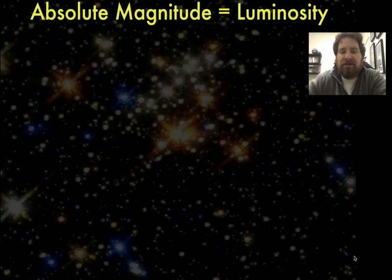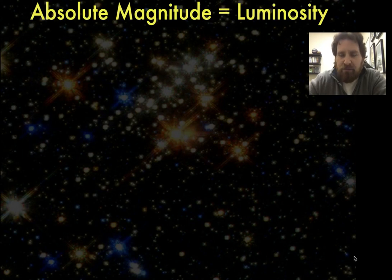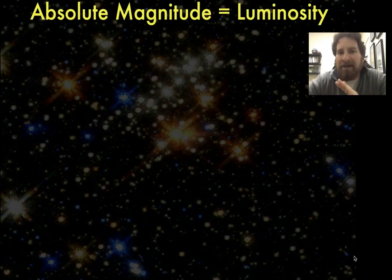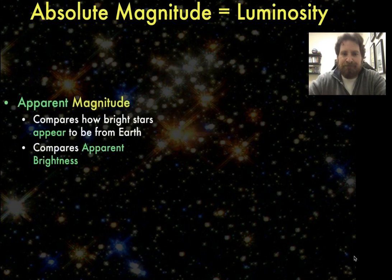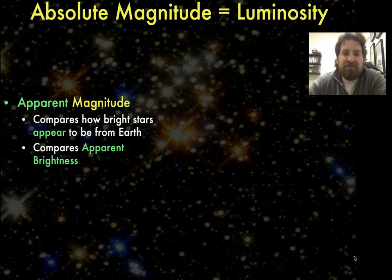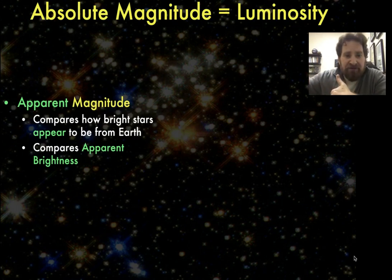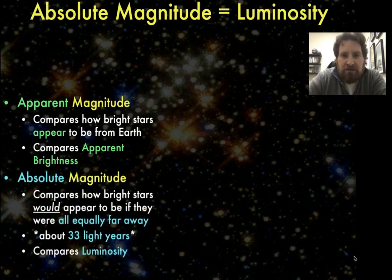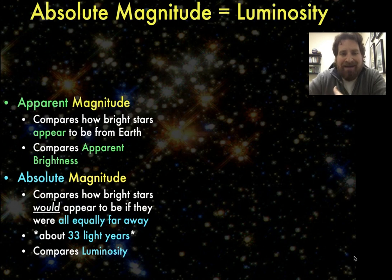The last thing I want to talk about is something called absolute magnitude, which is different from apparent magnitude. It's basically a way of comparing the luminosity — the actual brightness — of stars. Apparent magnitude compares how bright stars appear from Earth at their actual distances, whether 9 or 900 light years away. Absolute magnitude compares how bright stars would appear if they were all equally far away, and that distance is set at 33 light years.